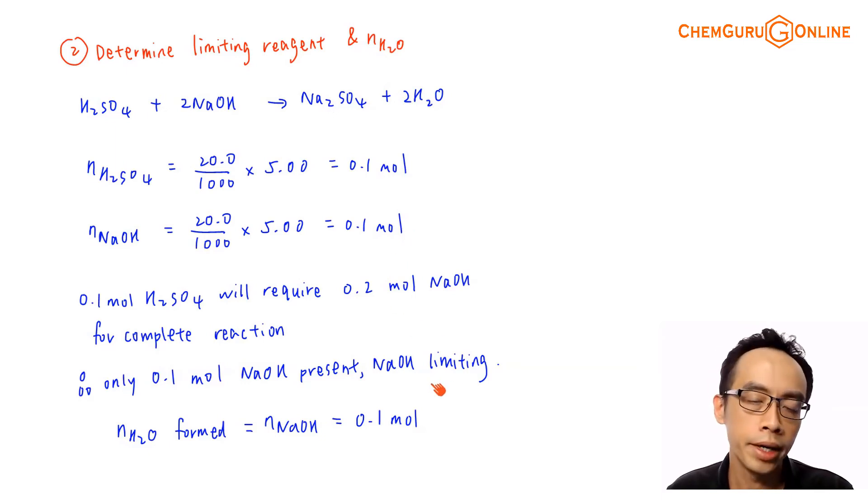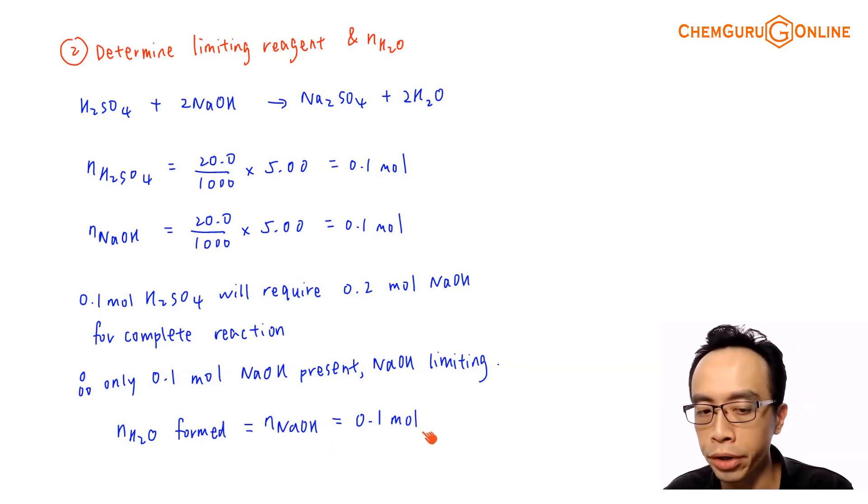This means that sodium hydroxide is limiting, H2SO4 is in excess. And therefore when I try to determine the number of mole of water formed, it must be based on limiting reagent, must be based on sodium hydroxide. I cannot base it on sulfuric acid because it is in excess, so not all of it is being reacted off. So the mole ratio between sodium hydroxide and water is 2 is to 2 or 1 is to 1. Therefore number of mole of water formed will just be the same as number of mole of sodium hydroxide, 0.1 mole.